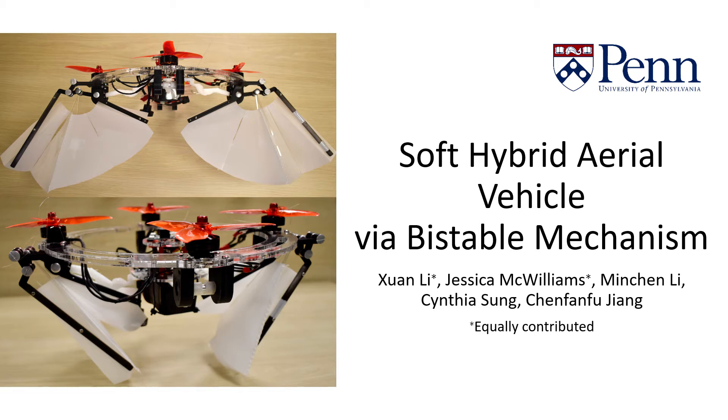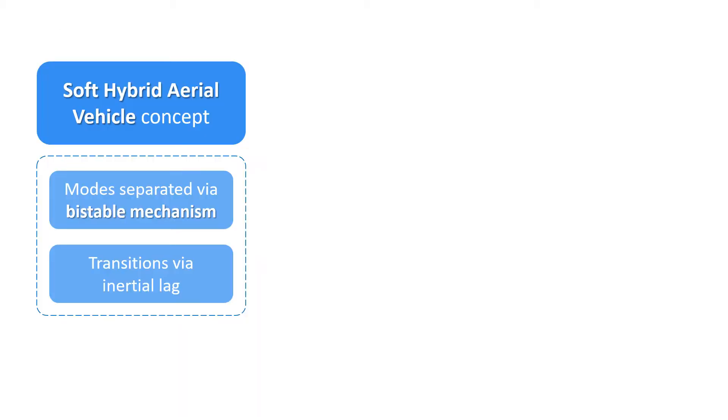We propose a novel hybrid aerial vehicle design that can switch between a quadrotor mode and a fixed-wing mode and remain in either mode in the absence of thrust. The new HAV design switches between two modes without adding actuators to the quadrotor by leveraging a compliant bistable mechanism and the inertia of the battery.